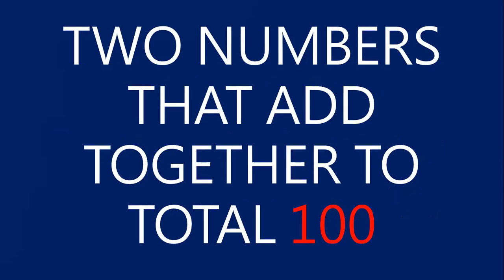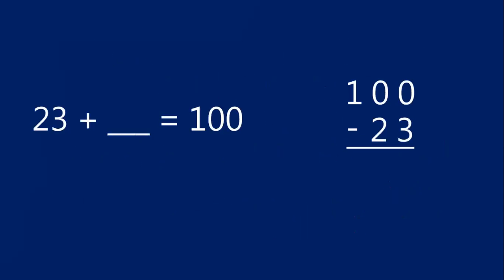We are going to find the two numbers that add together to total 100. I have the example of the number 23. If I wanted to find what is my complement of 23 — the number that I add to 23 is the complement — 23 plus something equals 100. So traditionally, I could set up a subtraction problem: 100 minus 23, and that will tell me the complement.